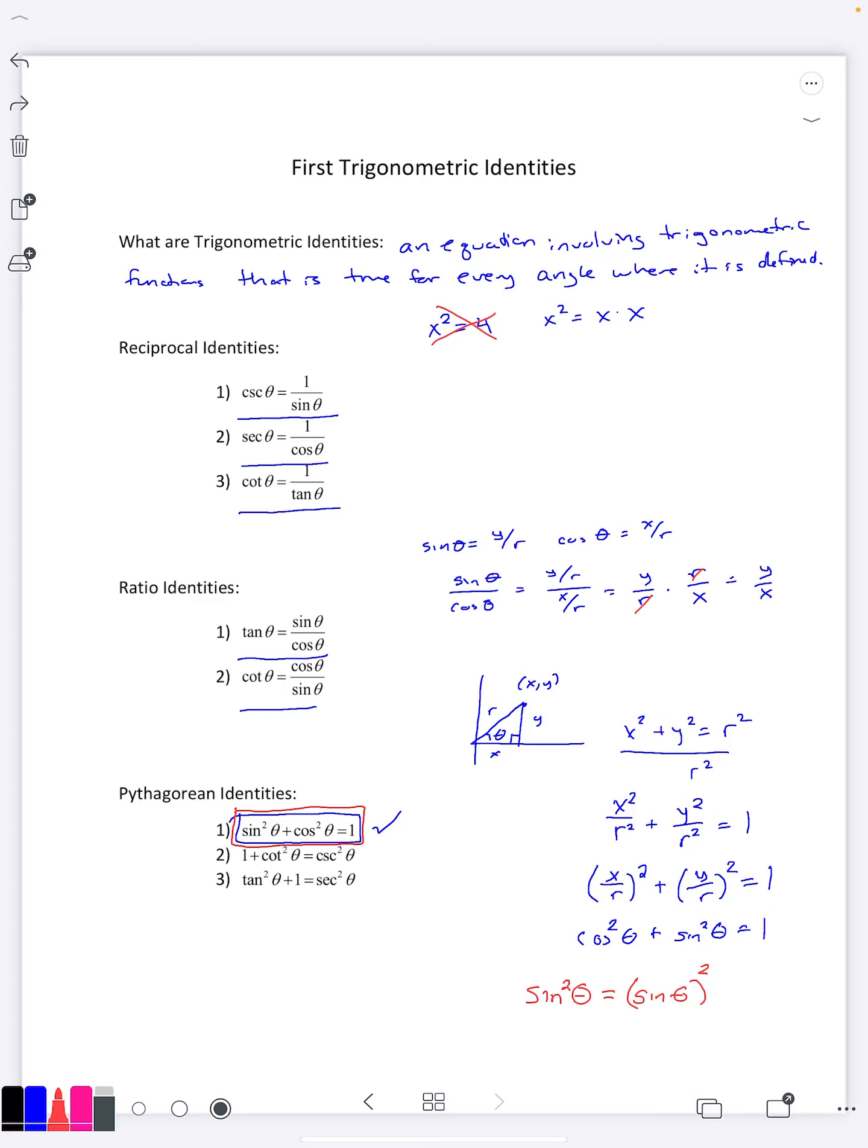Now, if you were to divide by something else, you would end up getting one of the other identities here. For example, if you divided the X squared plus Y squared equals R squared by X squared, you'd end up having a tangent squared plus one is secant squared. And if you divide by Y squared, you get one plus cotangent squared is cosecant squared. So since all three of them come from the Pythagorean theorem, that's why we call them Pythagorean identities.